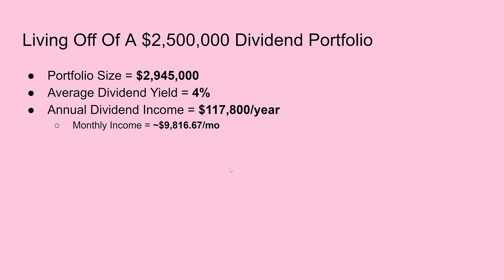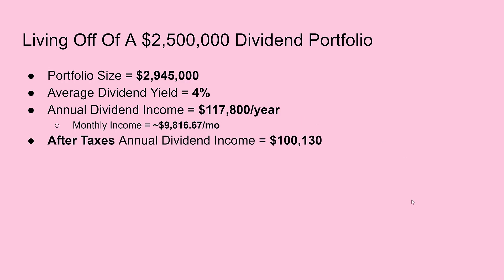Why aim for a four percent dividend yield? I'm being conservative with myself. There are ETFs providing eight, nine, ten, or even twelve percent yields, and I could cut this number significantly — but if I aim for four percent and my actual yield ends up being six or seven percent, I might not even need the full 2.945 million. I think it's critical to aim high. After accounting for qualified dividend taxes of about fifteen percent, my annual dividend income after taxes will be about one hundred thousand one hundred thirty dollars — completely passive. That works out to about eight thousand three hundred forty-four dollars per month.